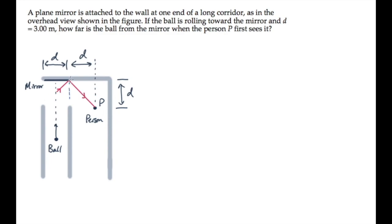When we look at this triangle in green, two of the legs have a distance d, so that angle must be 45 degrees. This angle also must be 45 degrees, because the angle of incidence is the angle of reflection.